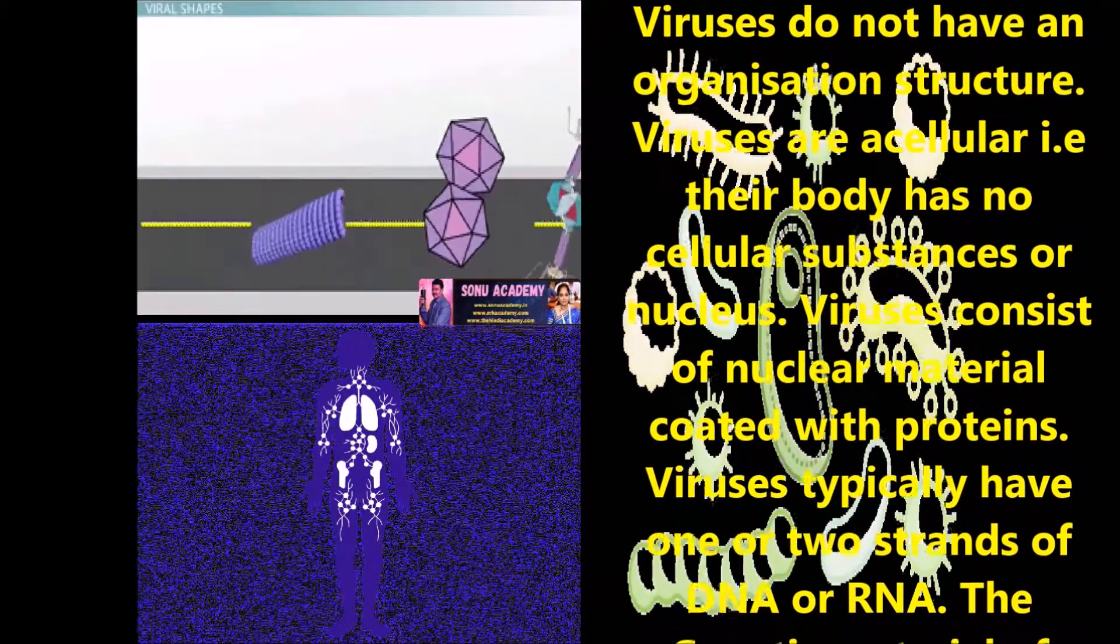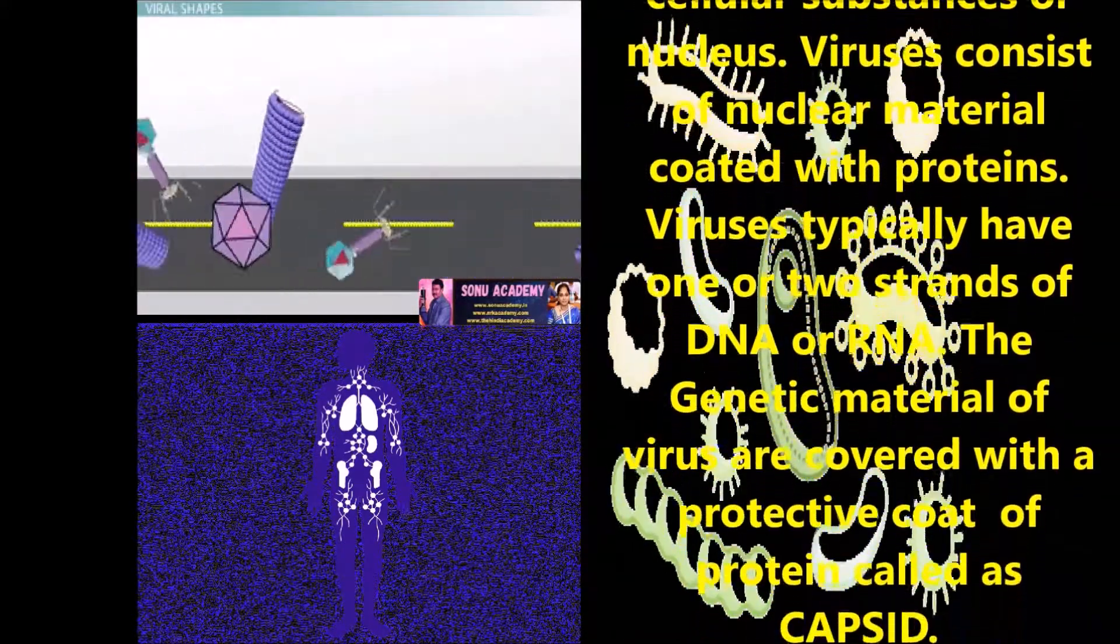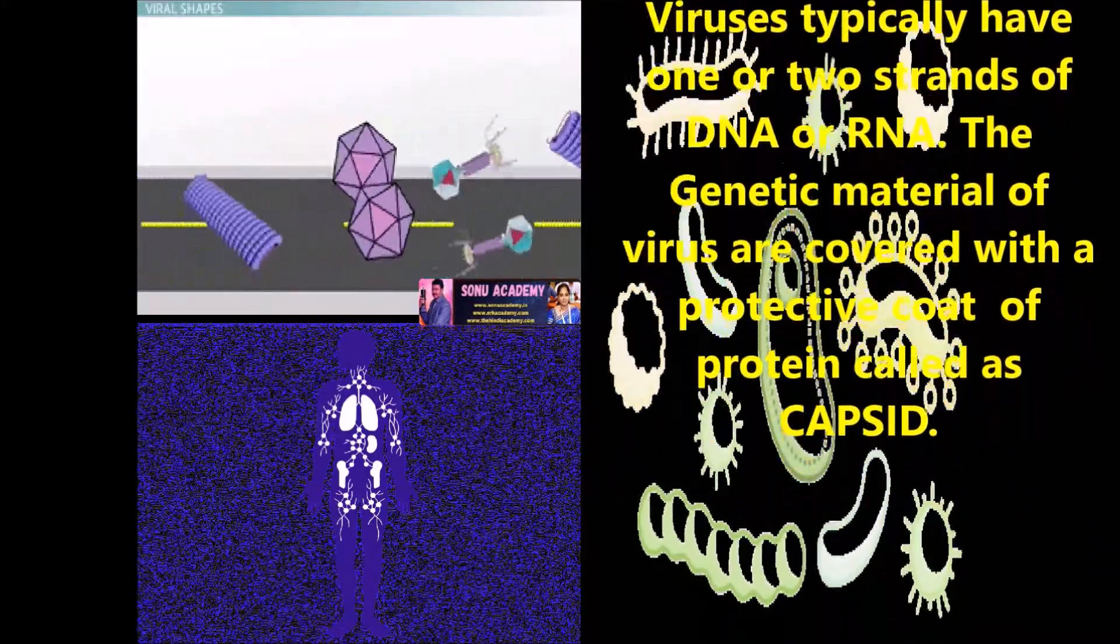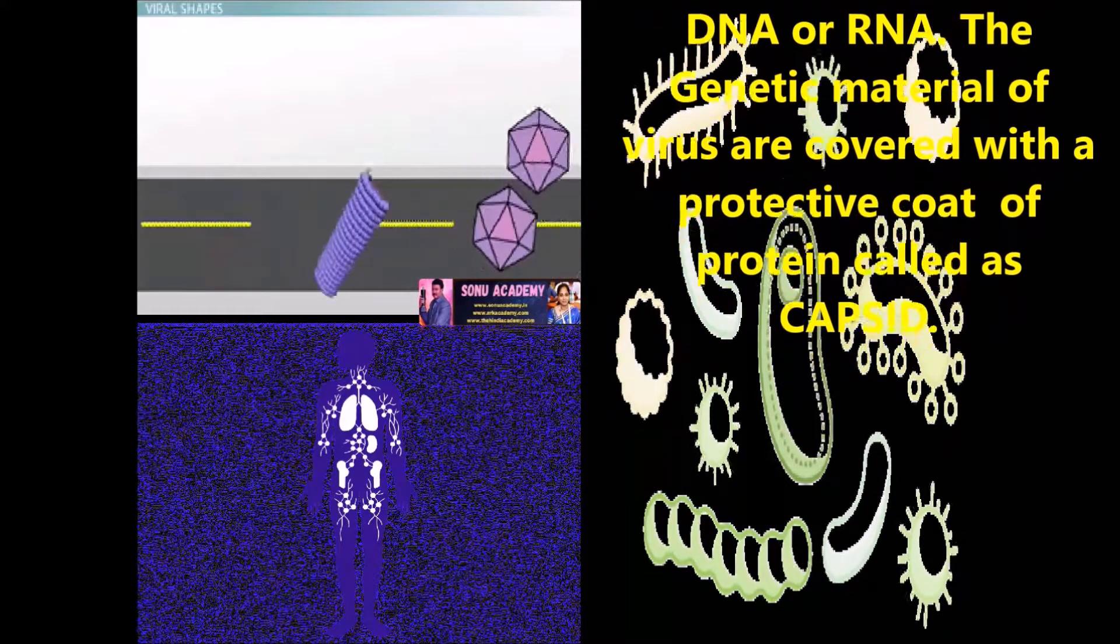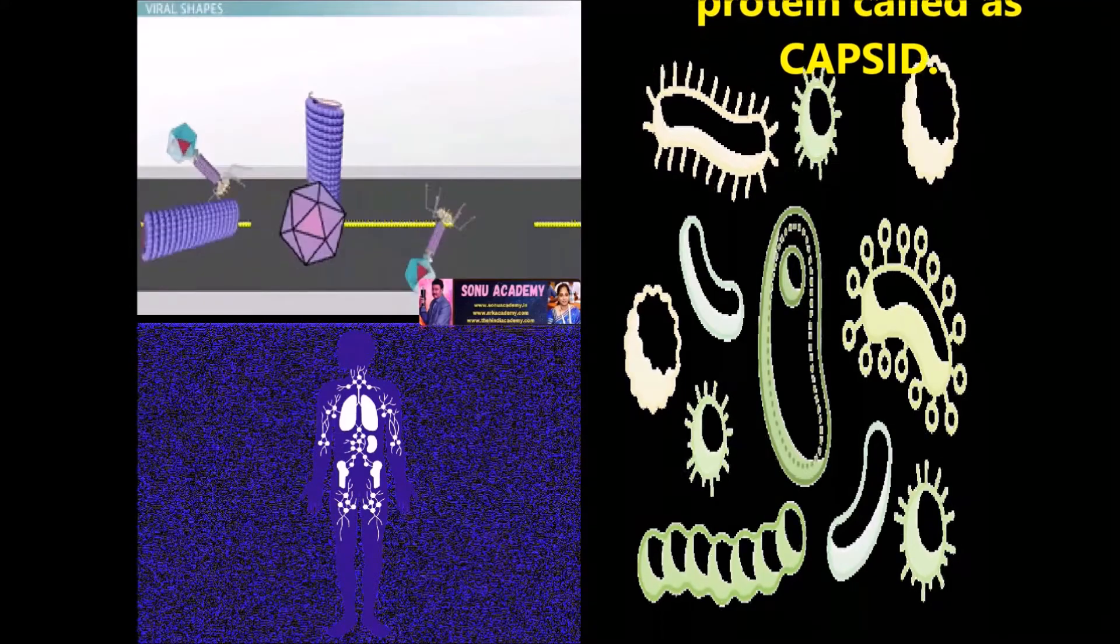Virus consists of a nuclear material coated with proteins. Viruses typically have one or two strands of DNA or RNA. The genetic material of viruses are covered with a protective coat of protein called capsid.